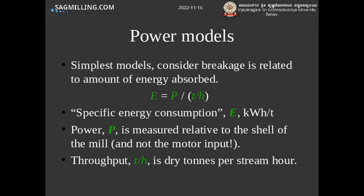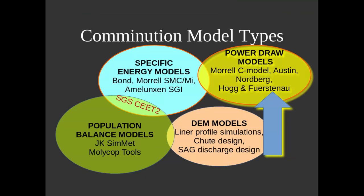The throughput in tons per hour should be the dry tons per stream hour of feed — either fresh feed or finished product. The comminution industry uses a wide variety of models for slightly different purposes, but they fall into basically four major categories. The power draw models describe how much power or torque should be generated by the charge of a particular geometry inside a mill of a particular geometry rotating at a particular angular velocity.